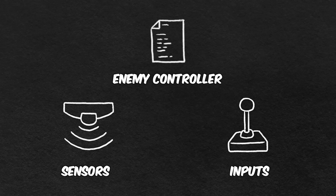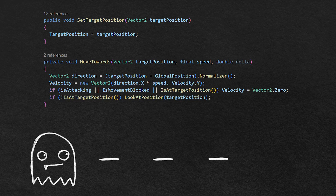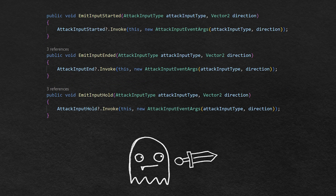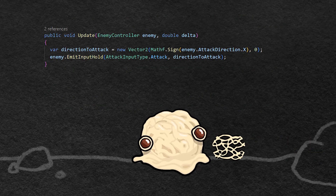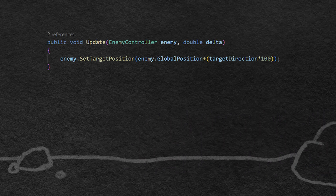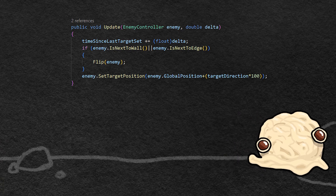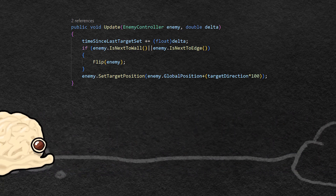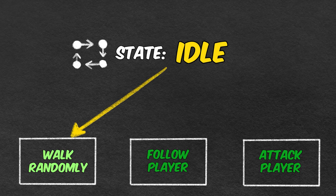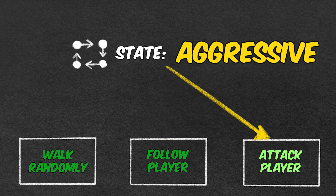Let's create some methods to allow the enemy to move to a specific point or to attack something. To demonstrate that, let's create a script that only calls the attack system and one that lets the enemy move from left to right. Now that this works, let's create a finite state machine that uses the strategy pattern to switch which behavior to use, depending on the current state.